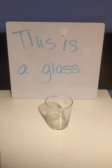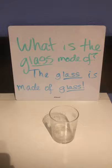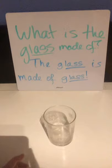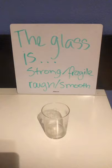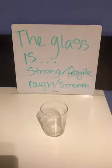What is this? This is a glass. What is the glass made of? The glass is made of glass. I drink from the glass and the material is glass. Glass comes from sand. Glass comes from sand. Is glass strong or fragile? Yes, glass is fragile.